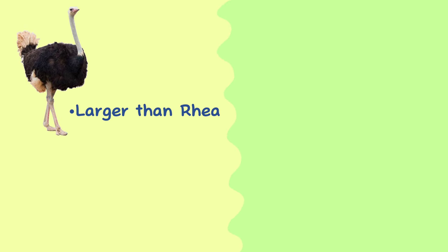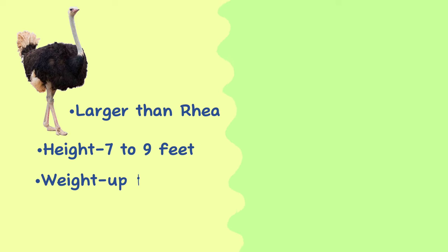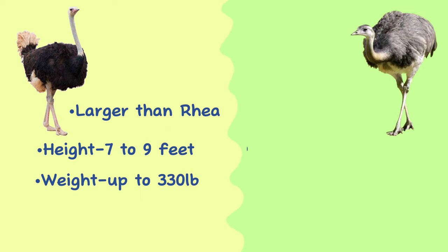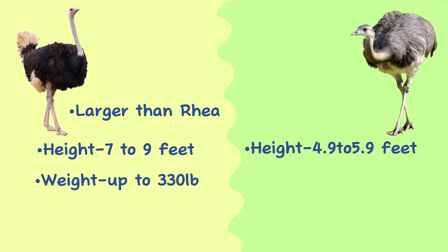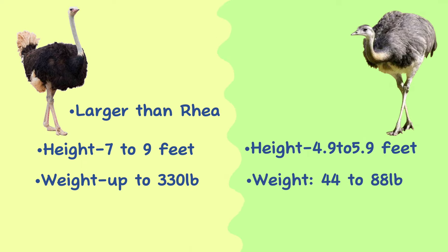Size. Ostriches are generally larger than Rheas. Adult male ostriches can reach heights of around 7 to 9 feet and weigh up to 330 pounds, while female ostriches are slightly smaller. In comparison, Rheas are typically about 4.9 to 5.9 feet tall and weigh between 44 to 88 pounds.